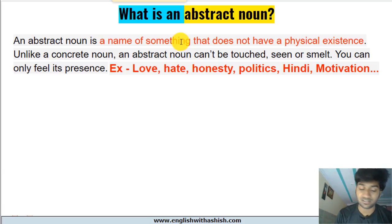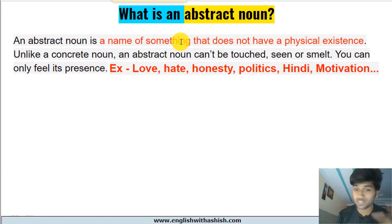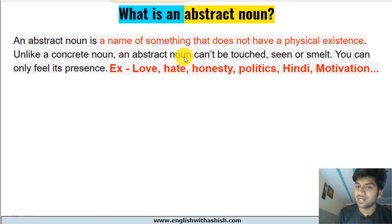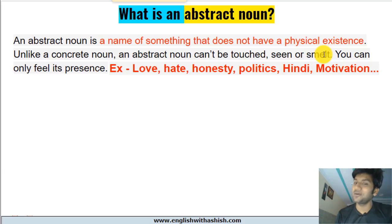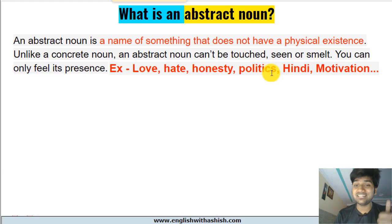An abstract noun is a name of something that does not have a physical form or existence. That means you cannot see it, you cannot smell it, you cannot taste it, you cannot hear it. Unlike a concrete noun, an abstract noun cannot be touched, seen, smelled, eaten, or heard. You can only feel its presence. Words like love, hate, honesty, politics, Hindi, motivation, and many more — these are abstract nouns.